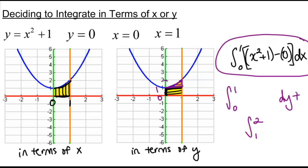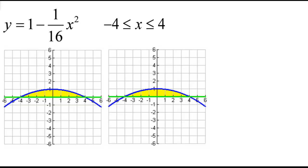Doing one integral is going to be better than two most of the time. You could get a weird example where you don't know how to integrate in terms of x and want to switch to y, even though it makes it two integrals, because you get something easier to integrate. In this particular case, though, we know how to integrate x squared plus 1.